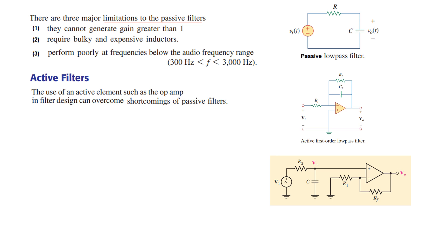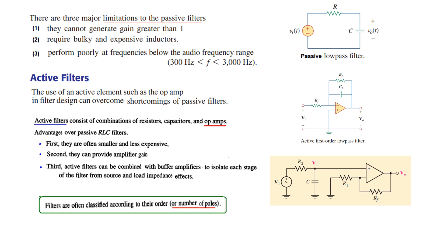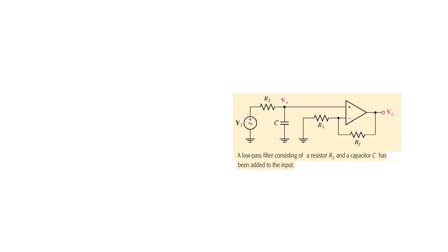With this configuration we are achieving both the low-pass filtering and the gain. Active filters consist of a combination of resistors, capacitors, and operational amplifiers. Their advantages are: they are often smaller and less expensive, they can provide amplifier gain, and they can be combined with a buffer amplifier to isolate each stage of the filter. Filters are also classified by order or number of poles. This is a first-order active low-pass filter with one operational amplifier.